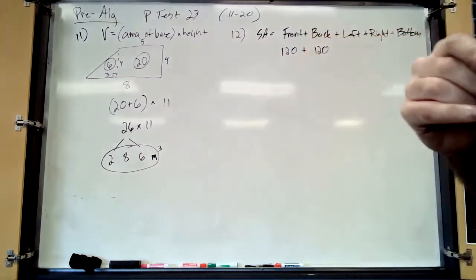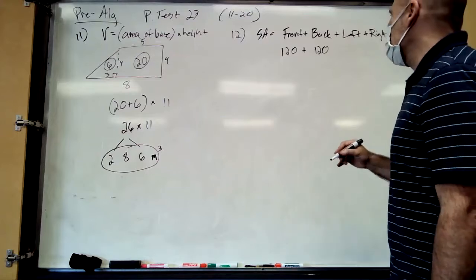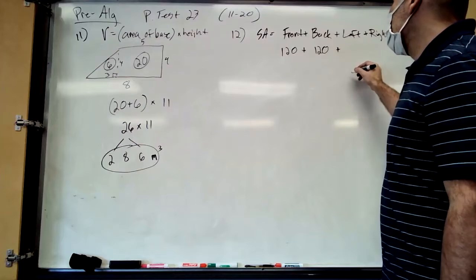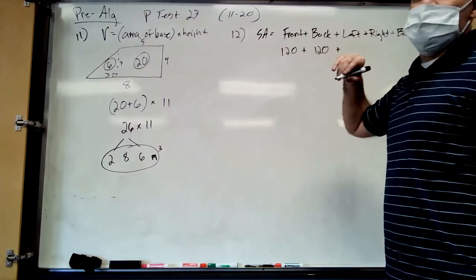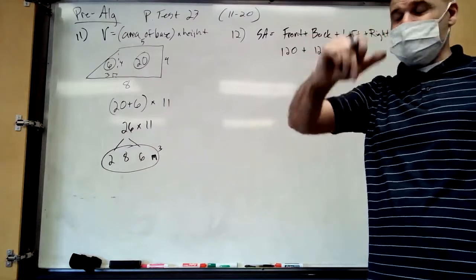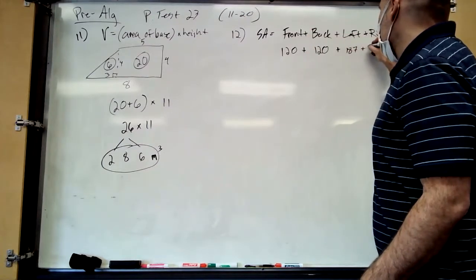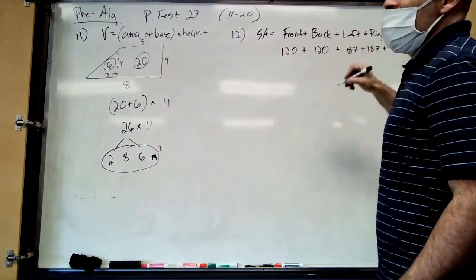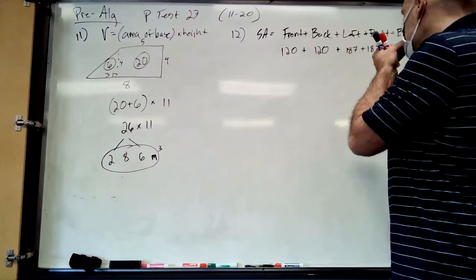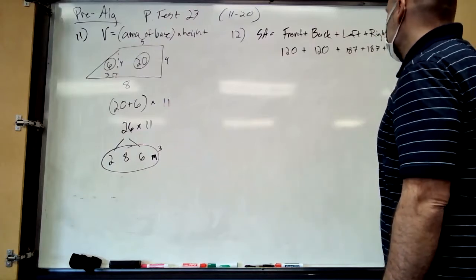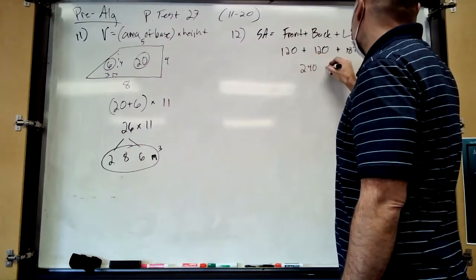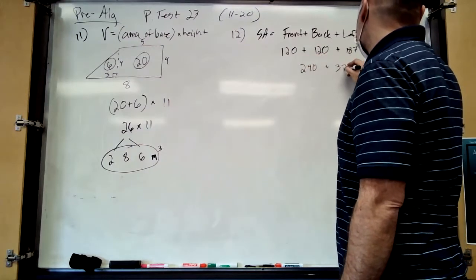What's the left and right? 187 each — that's 17 times 11. Remember the shortcut: 1 and 7 on the outside, add them for the 8 in the middle — 187 on both left and right. Good job. And then the bottom is 16 times 11, which is 176.